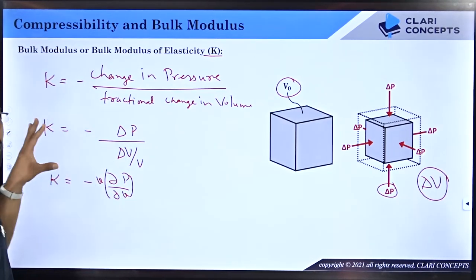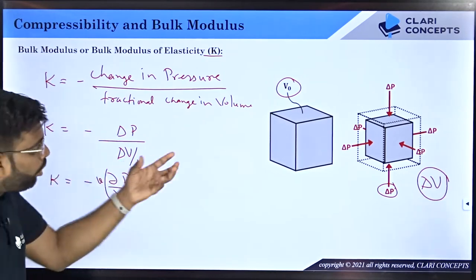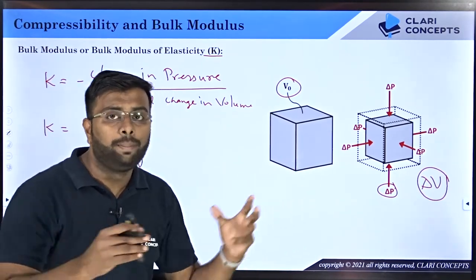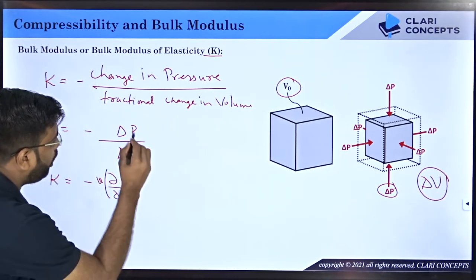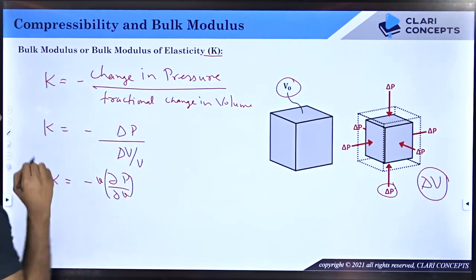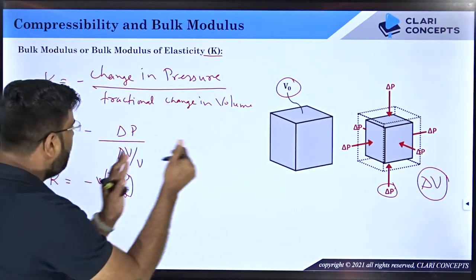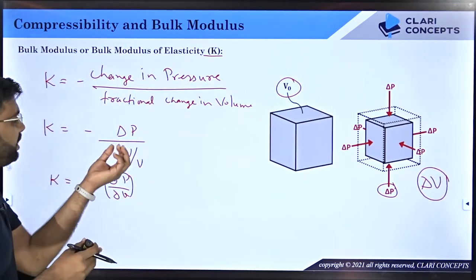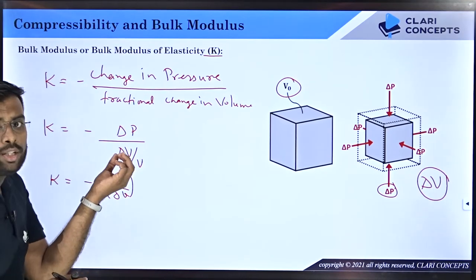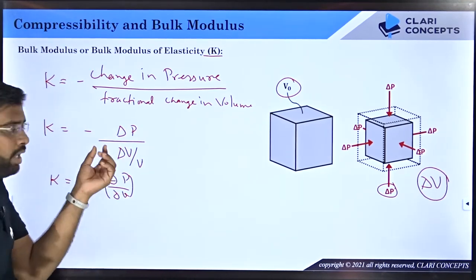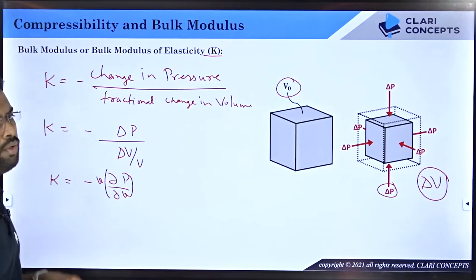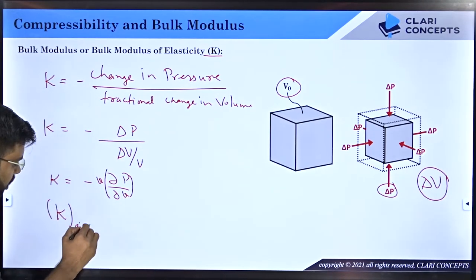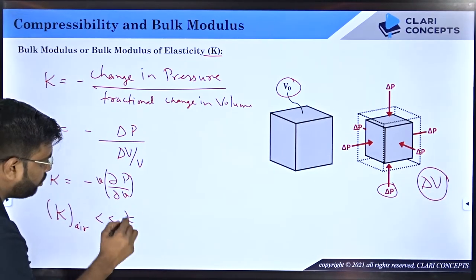A higher value of K means the fluid is bulkier — more difficult to compress. For a unit change in volume, the required delta P equals K. So for water, delta P for a 1% change will be much larger compared to a 1% change of volume in air. Therefore, delta P required for air is much smaller, meaning K for air is very, very small in comparison to K for water — that is the bulk modulus of elasticity.